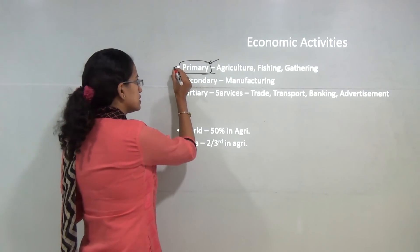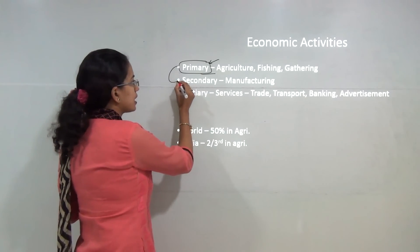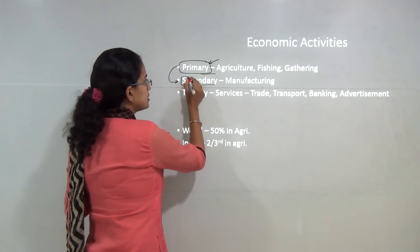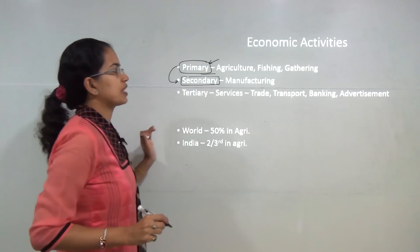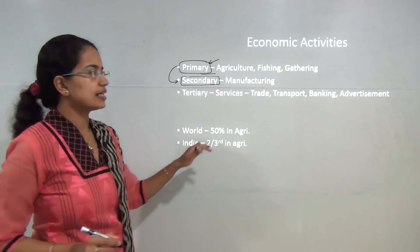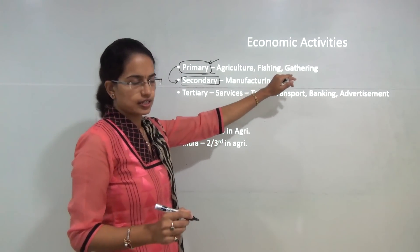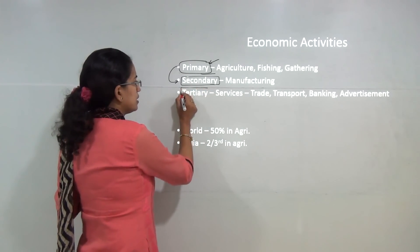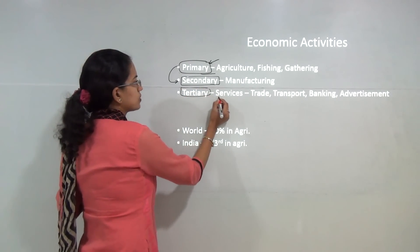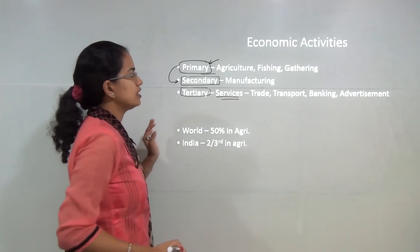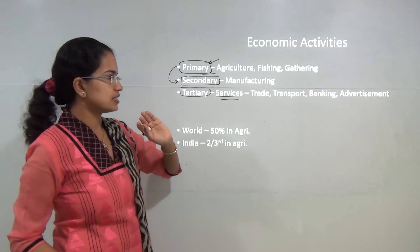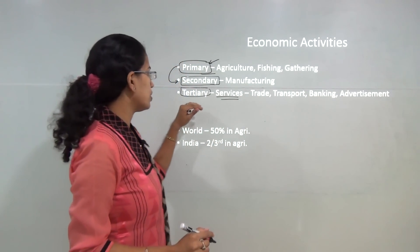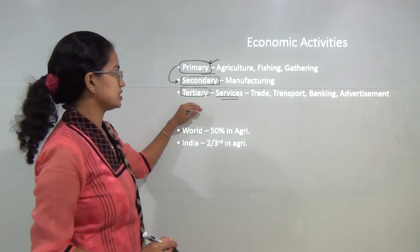When you are processing this primary activity, you require the secondary sector to be developed, and that sector is mainly manufacturing. Under the tertiary sector, which talks about various services, you have banking, advertisement, trade, and transport. So all these are the tertiary sector.